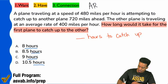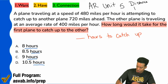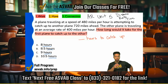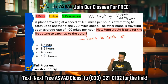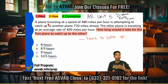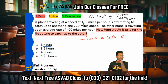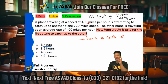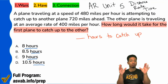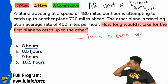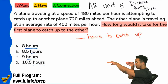For those of you who don't know, this is arithmetic reasoning, unit five — distance, rate, and time. That's the topic we're dealing with here. We're seeing miles per hour, so you know that's going to show up. Let's understand the context: a plane traveling at 480 miles per hour is attempting to catch up to another plane that's 720 miles ahead. Forget the numbers for now — just think about the situation. We have a plane going fast trying to catch up to another plane ahead.